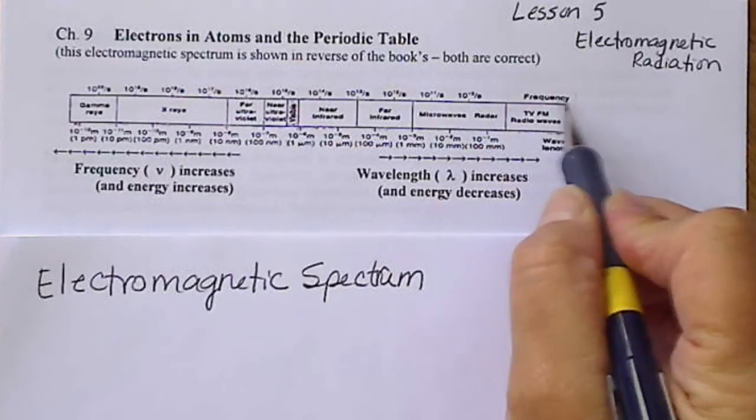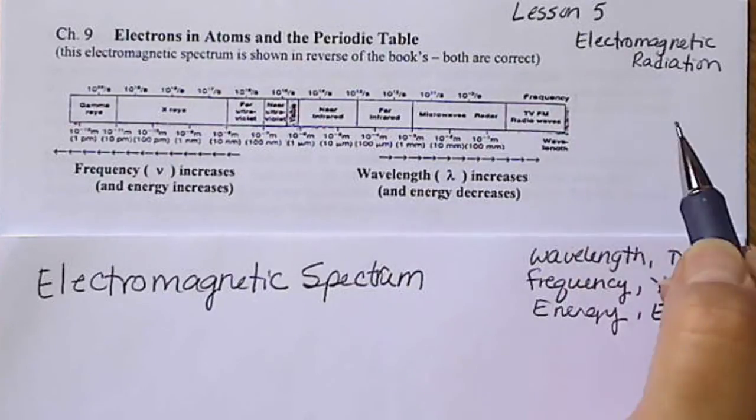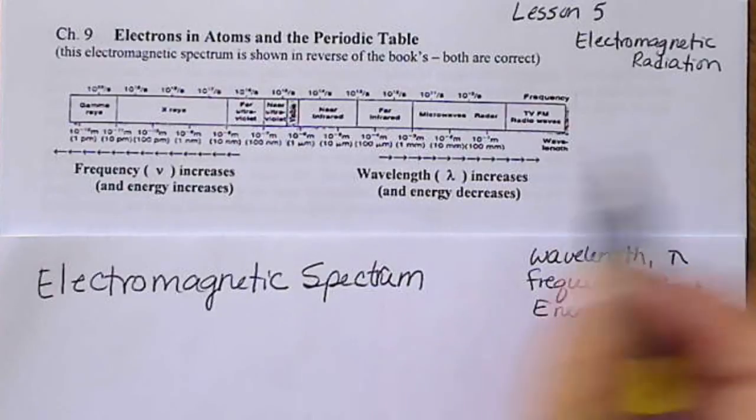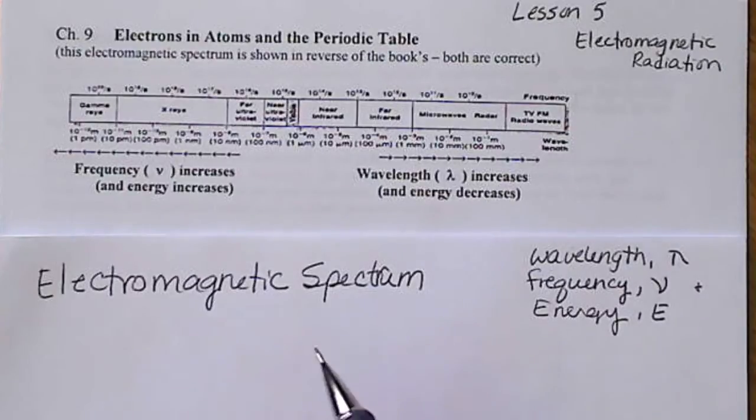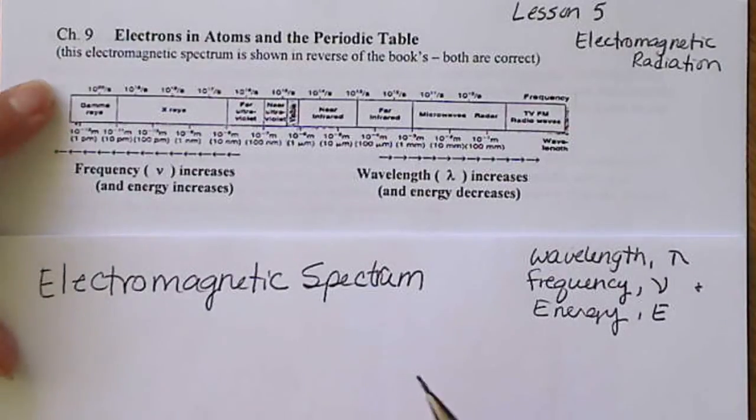But the frequency is written in values across the top of the chart. And then the wavelength is written across the bottom.